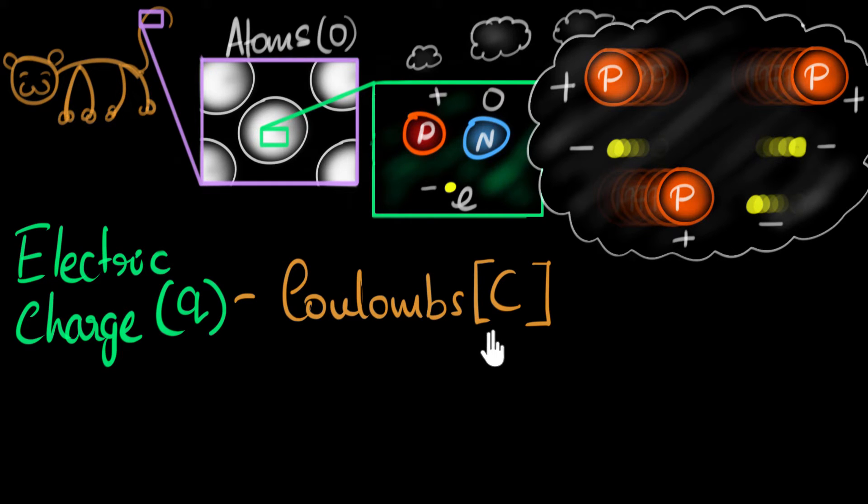To give you a sense of how big a coulomb is, turns out that the charge on an electron or a proton is a very, very small fraction of a coulomb. So if you were to look at the charge on an electron, which we usually represent as e, it turns out to be so small.